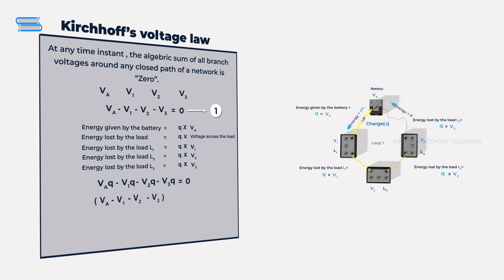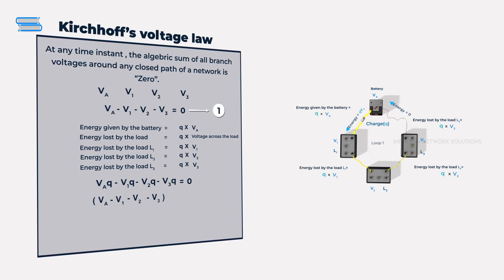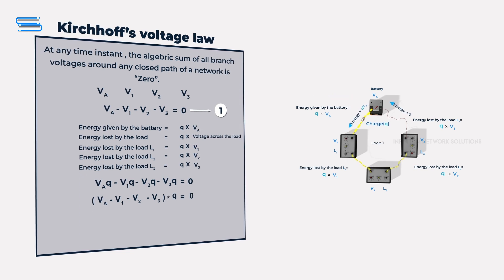We can simplify this by saying that VA minus V1 minus V2 minus V3, all times Q, is equal to zero.